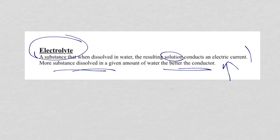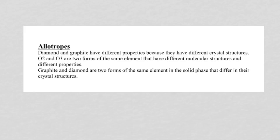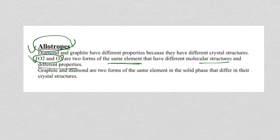Number four: allotropes. The word allotrope has not shown up directly on the Regents, but what allotropes are is two or more forms of the same element that have different structures and therefore different properties. Oxygen and ozone are examples, as are diamond and graphite. It showed up on three out of four recent Regents exams. You need to know: same atoms, different structure, different properties.